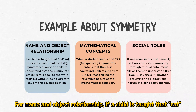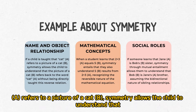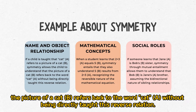For name and object relationships, if a child is taught that 'cat' refers to a picture of a cat, symmetry allows the child to understand that the picture of a cat refers back to the word 'cat' without being directly taught this reverse relation.